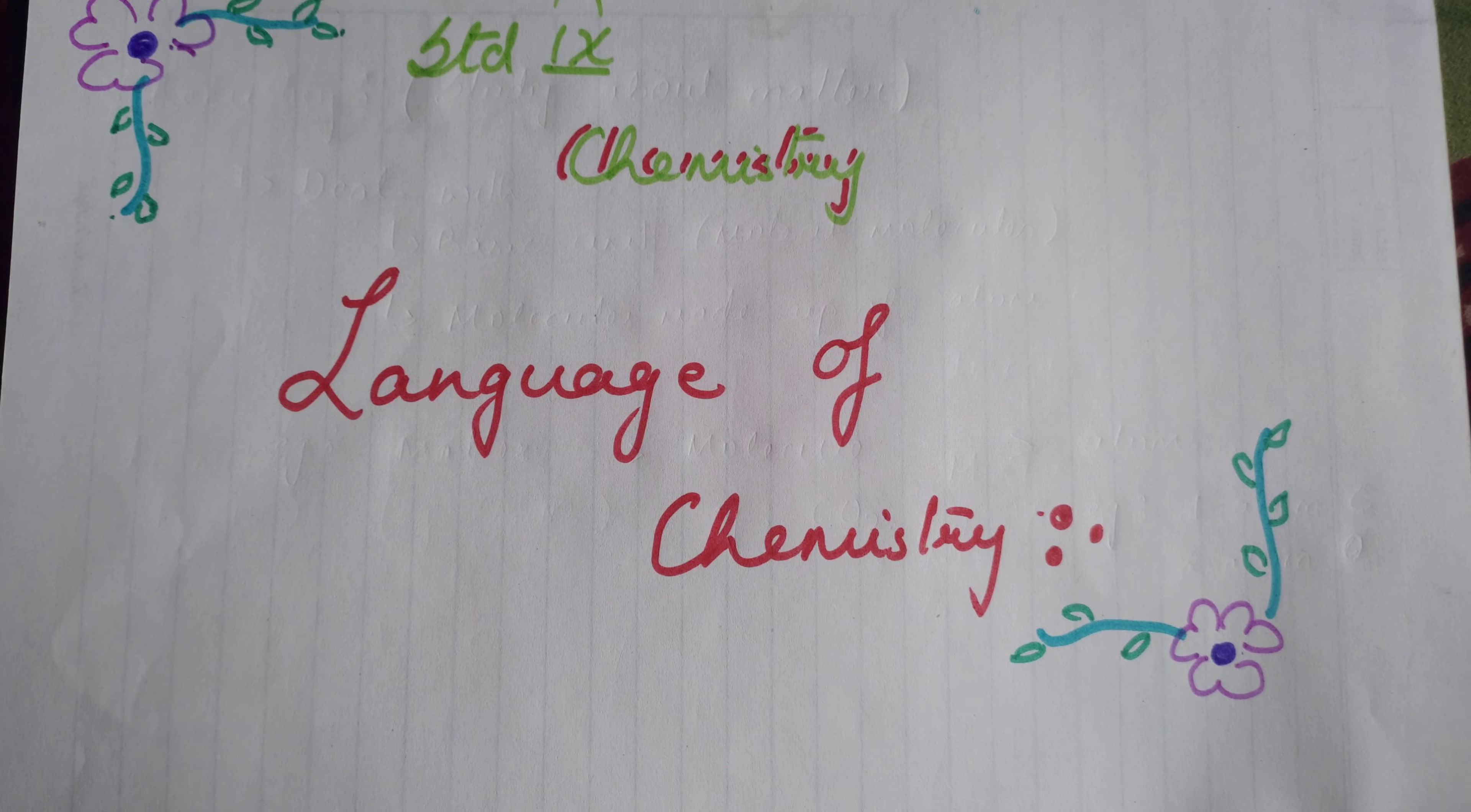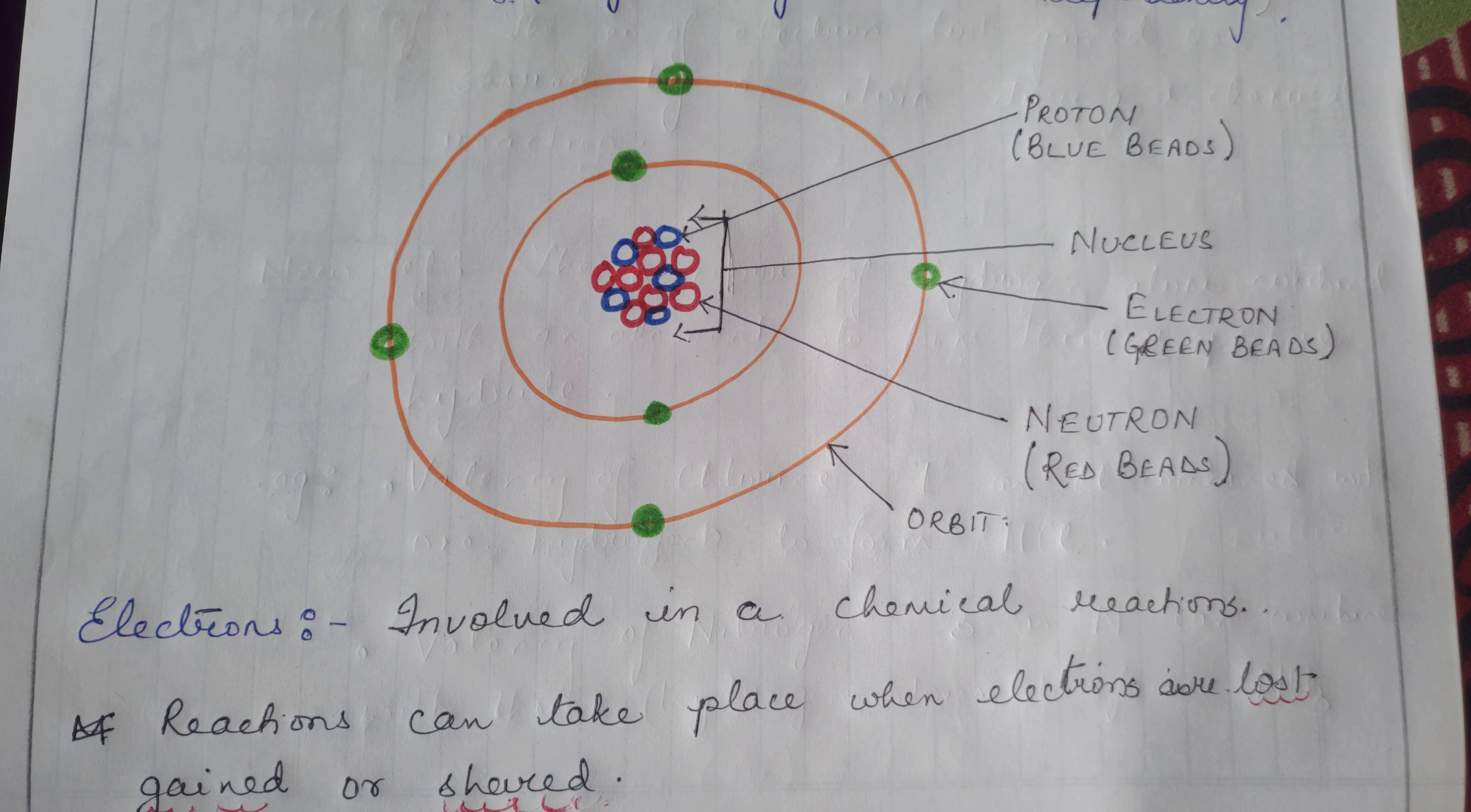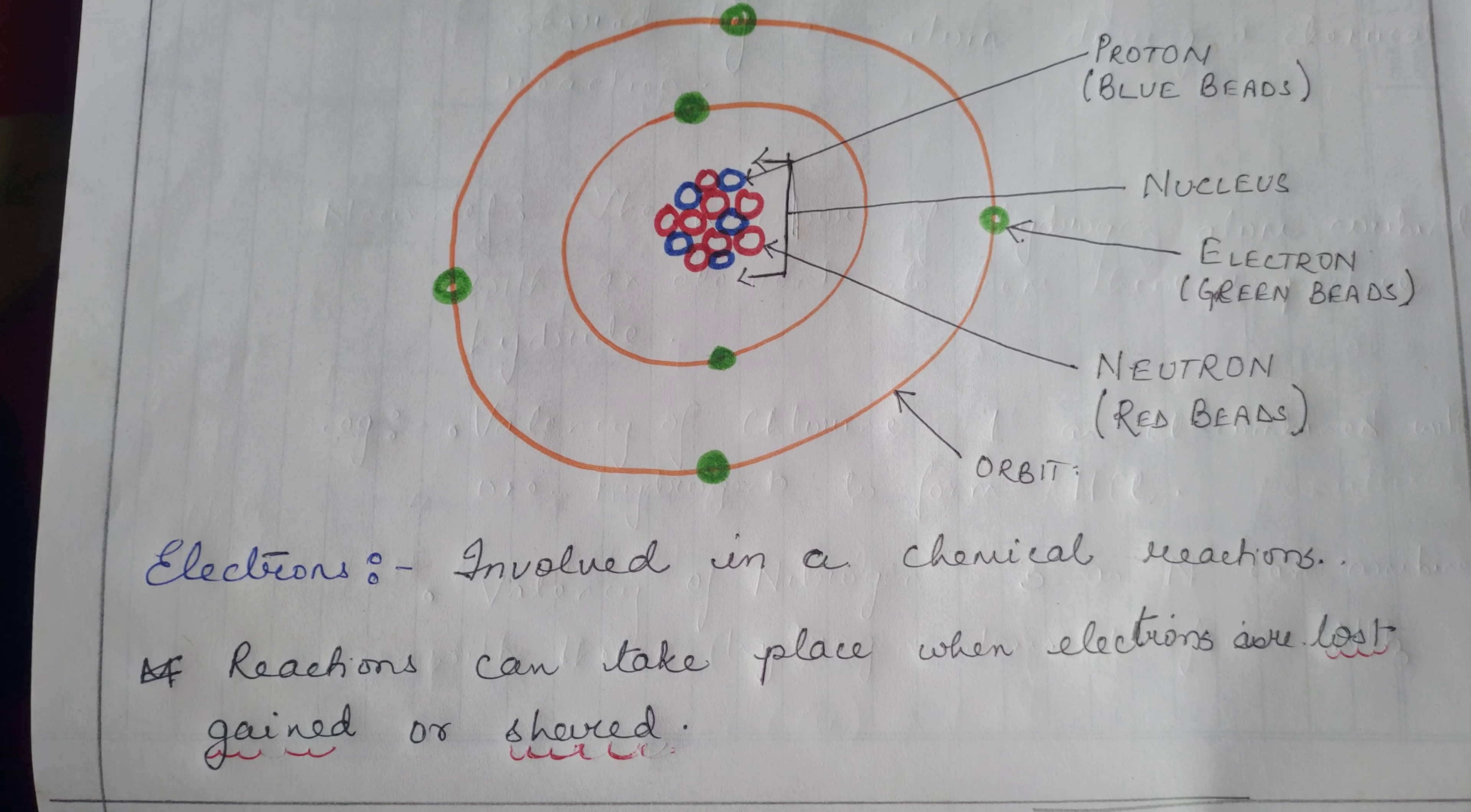Morning class, let's continue with the language of chemistry. If you can remember, we last spoke about atoms, how they may or may not exist independently, and the different fundamental particles of the atom: electrons, protons, and neutrons. Electrons are involved in chemical reactions. Not all electrons participate in chemical reactions, rather only the valence electrons or electrons present in the last shell are involved.